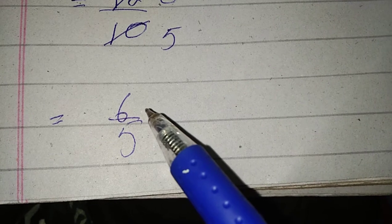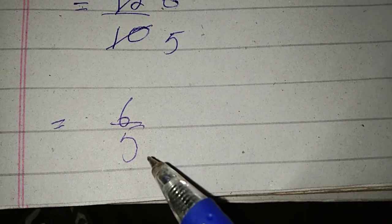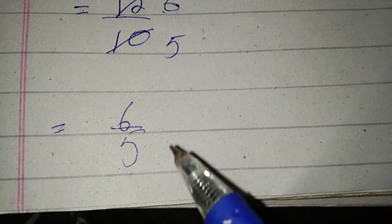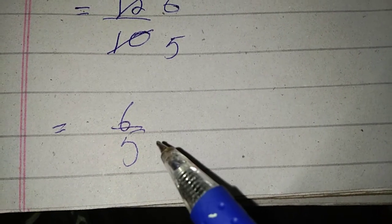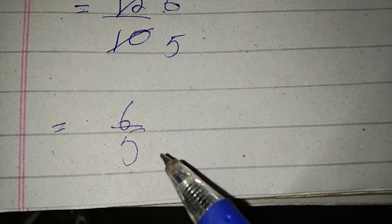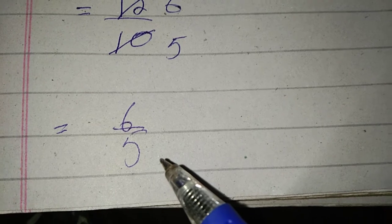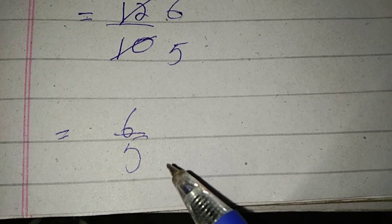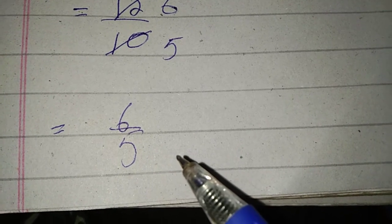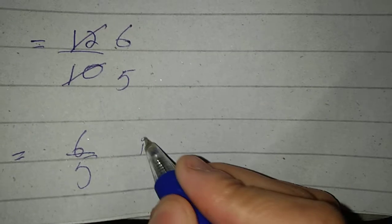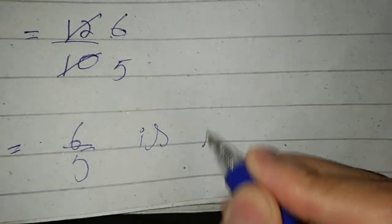Six is an even number and five is an odd number. With even and odd numbers, further division is not possible. So six by five is the answer.